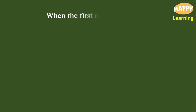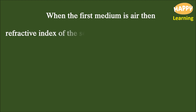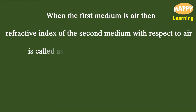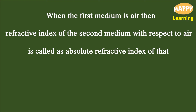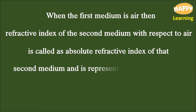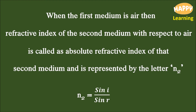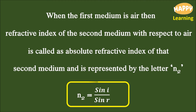When the first medium is air, the refractive index of the second medium with respect to air is called the absolute refractive index of that second medium, and is represented by the letter n₂. n₂ is equal to sin i divided by sin r.